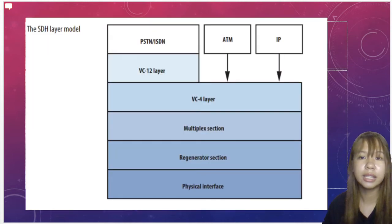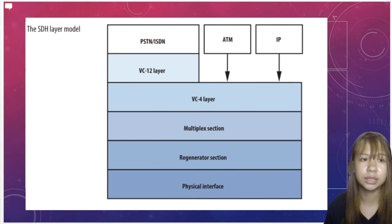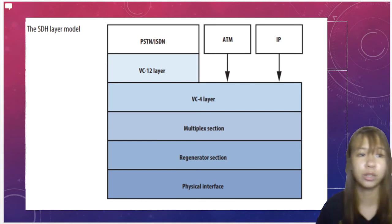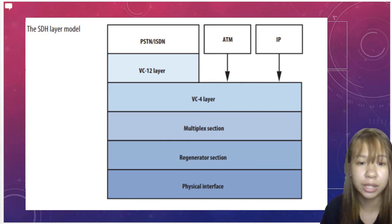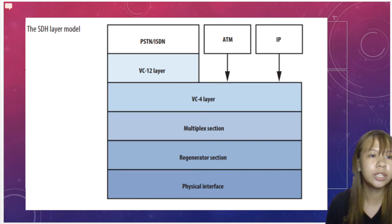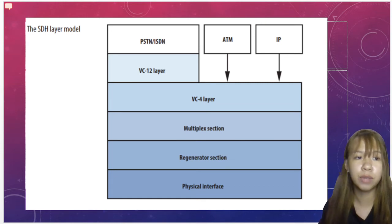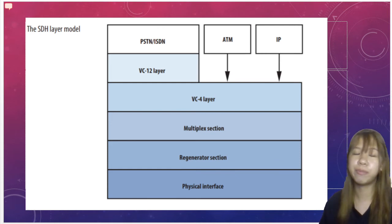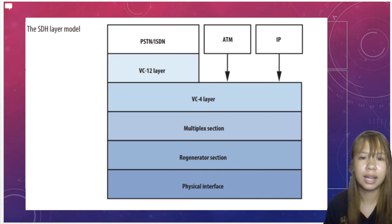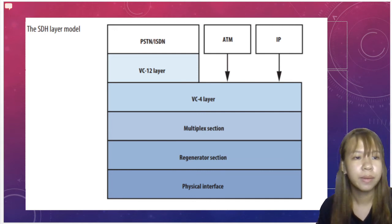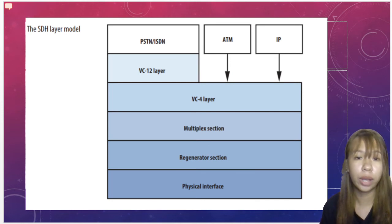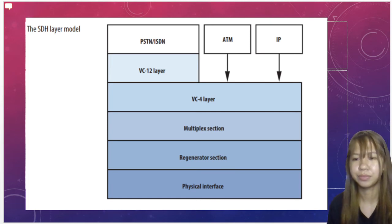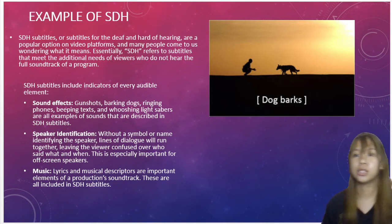The SDH layer model: SDH networks are subdivided into various layers directly related to the network topology. The lowest layer is the physical layer or physical interface, which represents the transmission medium — usually glass fiber, or possibly a radio or satellite link. The regenerator section covers the path between regenerators, and the regenerator section overhead or RSOH is available for signals required within this layer.